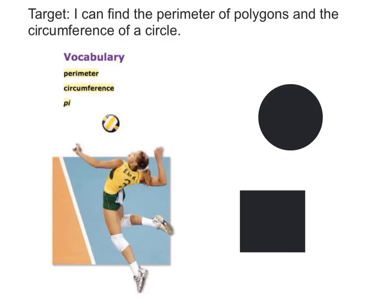In this lesson, the target states: I can find the perimeter of polygons and the circumference of a circle. Perimeter and circumference are kind of the same thing. Perimeter or circumference are the distance around. The distance around a square, like this, would be called the perimeter.